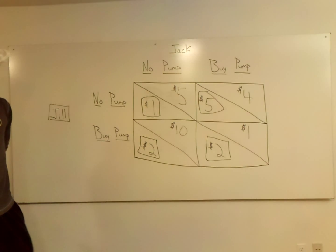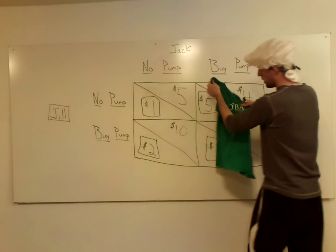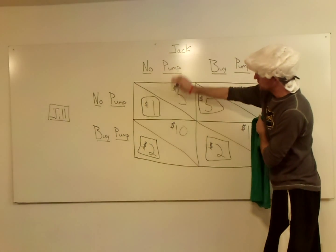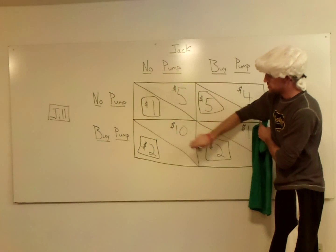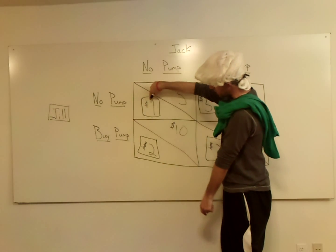All right. If Jack goes no pump, remember, you're going to ignore all this over here. It doesn't even matter. You only care about these two boxes, because that's where Jack is no pump. So Jill's only options are $1 or $2.